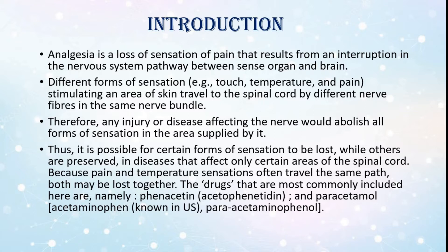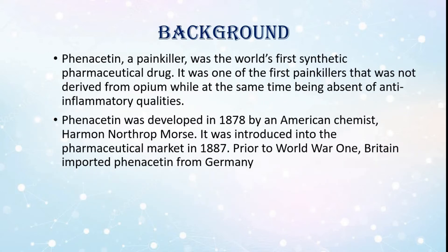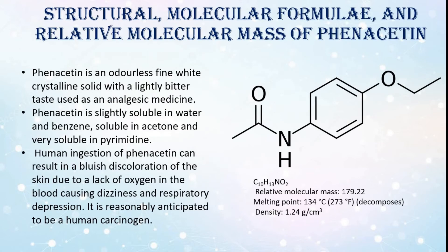Background: Phenacetin, a painkiller, was the world's first synthetic pharmaceutical drug. It was one of the first painkillers not derived from opium, while at the same time being absent of anti-inflammatory qualities. Phenacetin was developed in 1878 by American chemist Harmon Northrop Morse. It was introduced into the pharmaceutical market in 1887. Prior to World War One, Britain imported phenacetin from Germany.